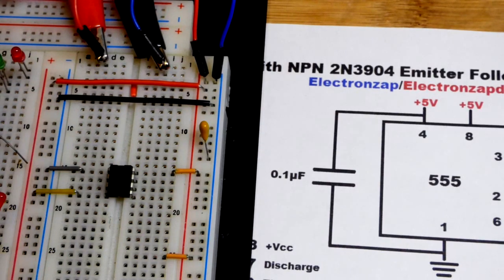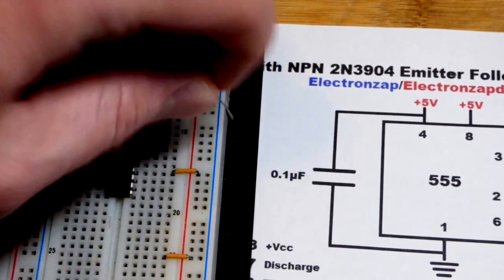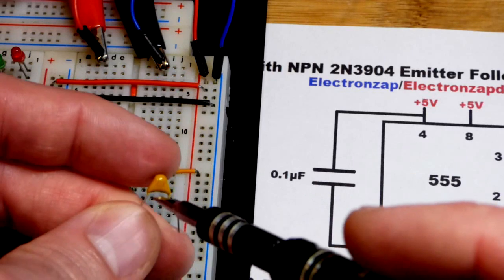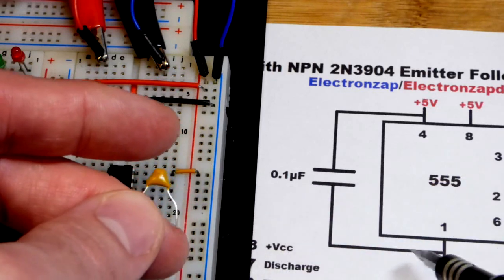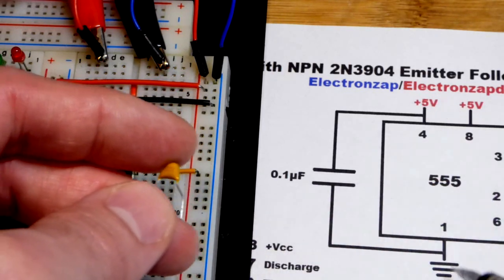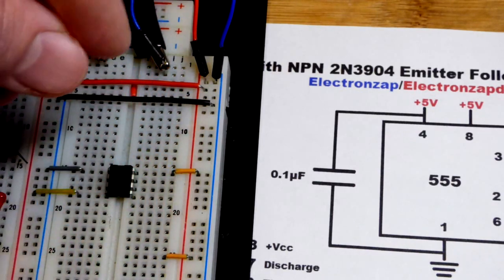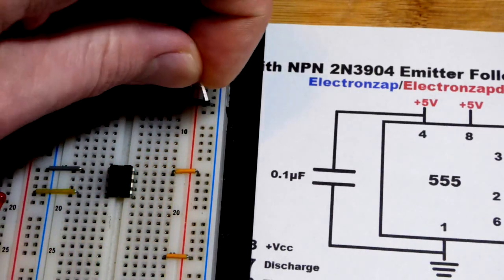The 555 timer depends on a pretty steady voltage. So this is a 0.1 microfarad, the same as 100 nanofarad, capacitor. We're putting it from the positive rail to the negative rail.